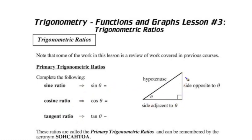We have a right angle triangle here with this as the reference angle. When we look at this angle, this is the side that is opposite to that angle. This side — the side that helps make the angle — is the side that we call adjacent, or right beside. Adjacent means right beside. And this is the hypotenuse.